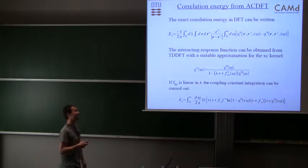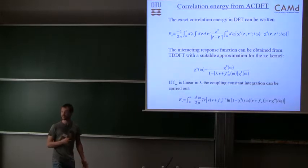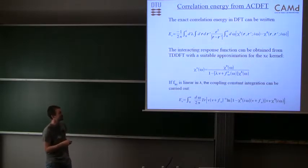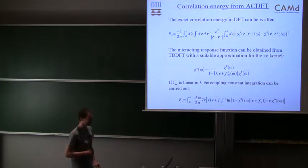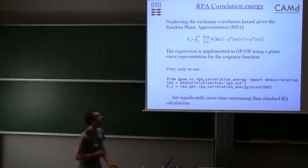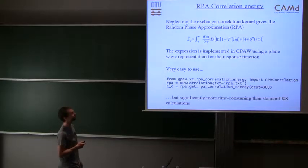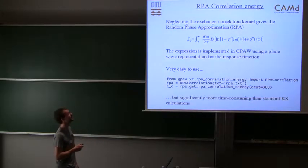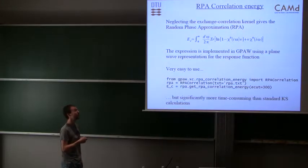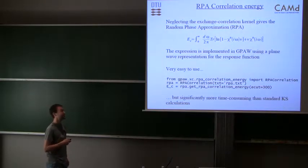If the exchange correlation kernel is linear in lambda, which is the case for exchange kernels, then we can carry out the coupling constant integration. If we set the exchange correlation kernel to zero, we get the standard random phase approximation. This is still a non-trivial approximation for the response function because we have the Coulomb interaction. We obtain this expression for the correlation energy, implemented using a plane wave representation of the response function.